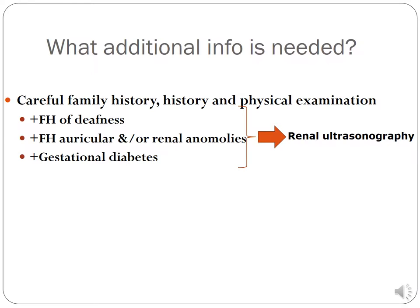So what additional information is needed? You're going to decide using this algorithm. You want a careful family history, history of this child, and a physical exam. If the history is positive for family history of deafness, ear anomalies, or renal anomalies, or any positive history of gestational diabetes, then a renal ultrasound is in order.